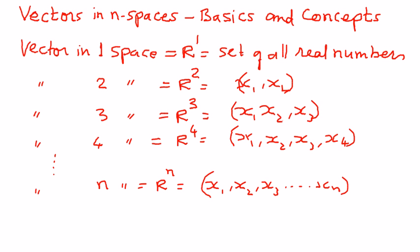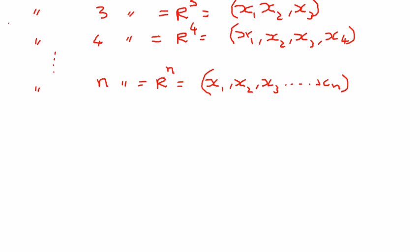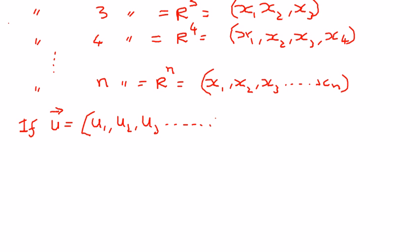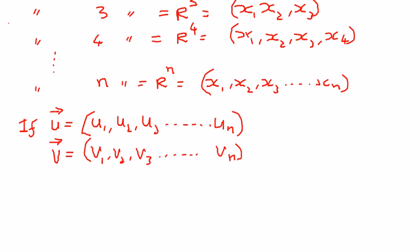So having said that, let us define the Rn vector. The definition is: if u is a vector and its components are u1, u2, u3, all the way to un, and if v is another vector whose components are v1, v2, v3, all the way to vn,